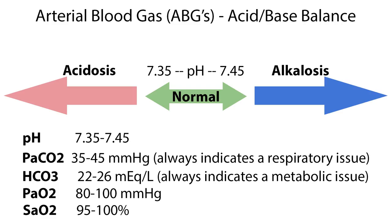ABGs, or arterial blood gas measurements, are used to evaluate lung function and acid-base balance. An imbalance may occur with heart failure, kidney failure, uncontrolled diabetes, severe infections, and drug overdose. Arterial blood pH should range between 7.35 to 7.45; acidic blood has a lower pH, whereas alkaline blood has a higher pH. PaCO2, the partial pressure of carbon dioxide, ranges from 35 to 45 mmHg; when it is out of range, it always indicates a respiratory issue. HCO3, or bicarbonate, ranges from 22 to 26 mEq per liter, and when it is out of range, it always indicates a metabolic issue.